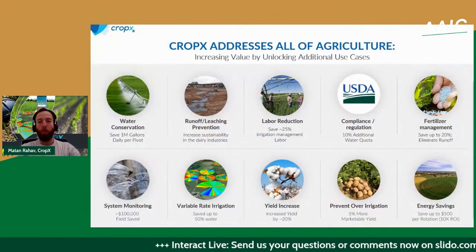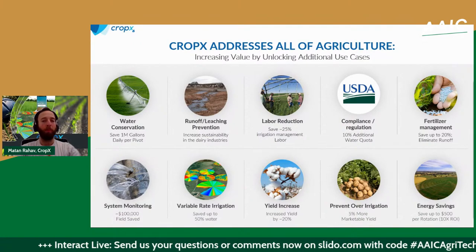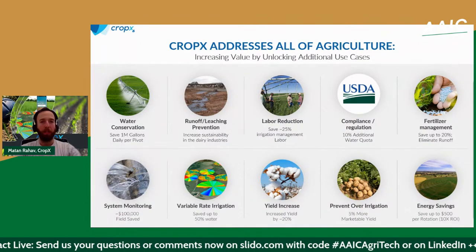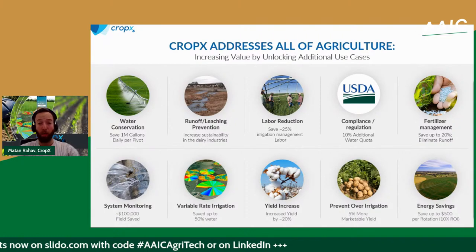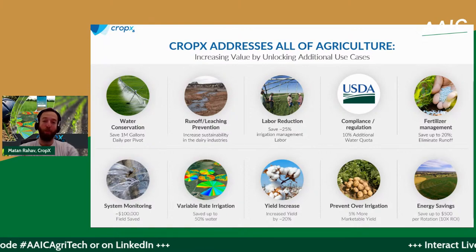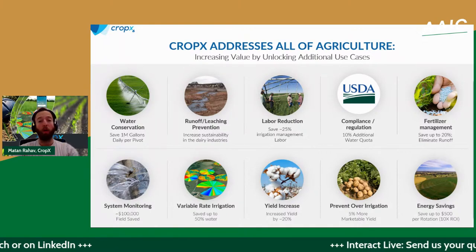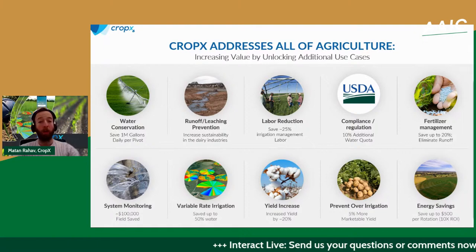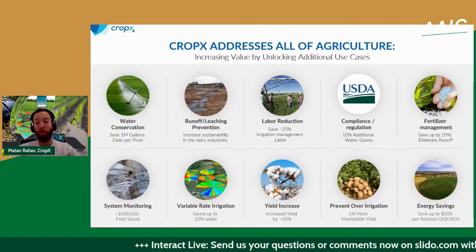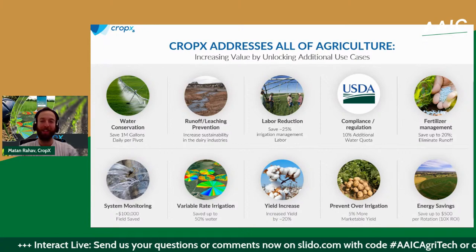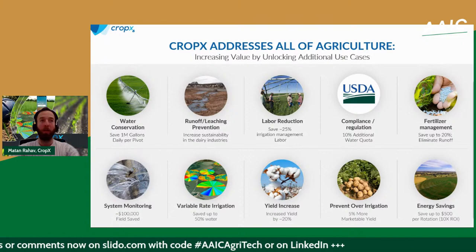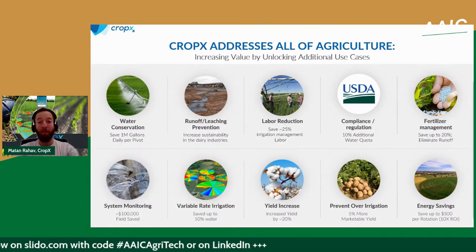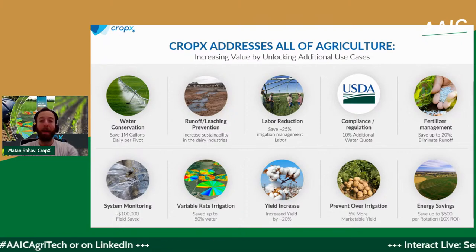CropX collaborates with the entire ag food value chain — from crop insurance to agribusinesses, trading companies, agrochemical, OEM, and irrigation system manufacturers. The value we deliver to farms and producers includes savings on water, fertilizer, manual labor, energy, and unnecessary travel to the field. It allows remote monitoring and becoming more environmentally sustainable by maximizing yield potential and minimizing input application.